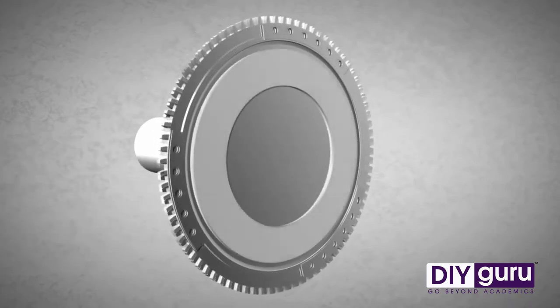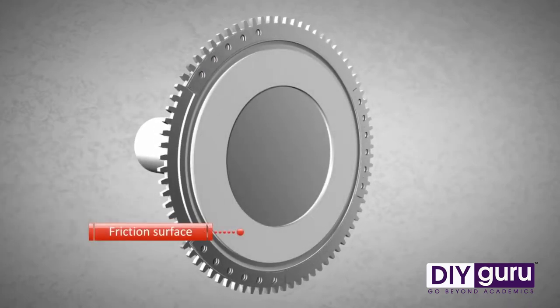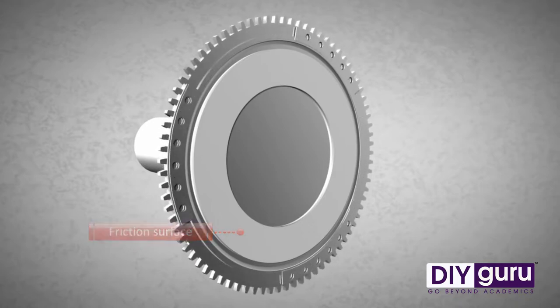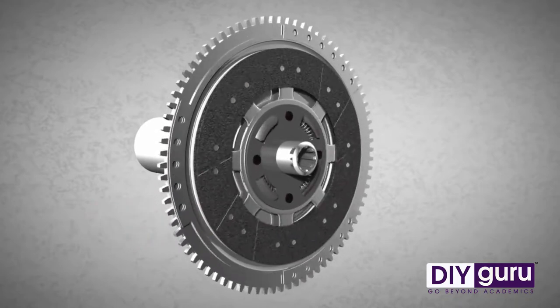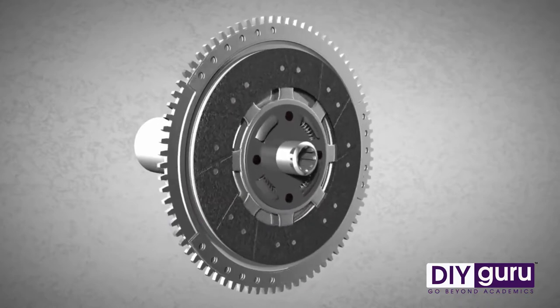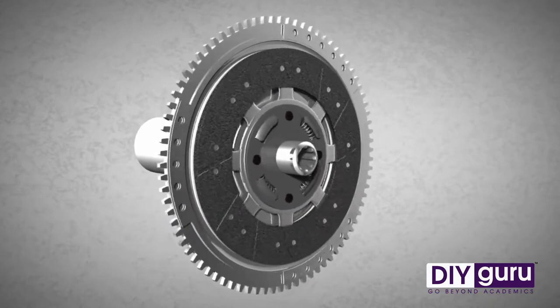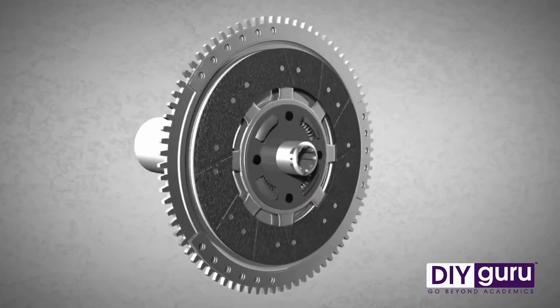The flywheel is equipped with a friction surface. The clutch disc has friction surfaces too. When the friction surface of the flywheel and the friction surface of the clutch disc are brought into contact with each other, the clutch disc rotates.